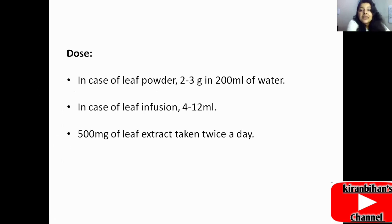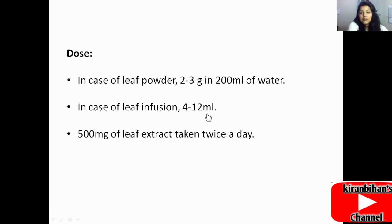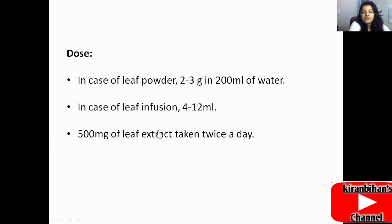The dose of Ocimum basilicum: for leaf powder, two to three grams in 200 ml of water. For leaf infusion, four to twelve milliliters. A dose of 500 mg leaf extract is taken twice a day.